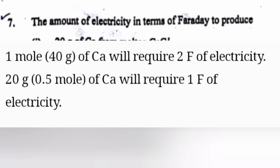7. The amount of electricity in terms of Faraday to produce 1. 20g of Ca from molten CaCl2. Answer: Ca^2+ + 2e^- gives Ca. 1 mol (40g) of Ca will require 2 F of electricity. 20g (0.5 mol) of Ca will require 1 F of electricity.